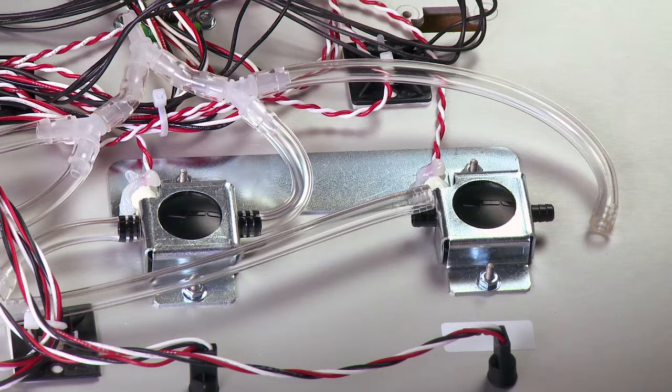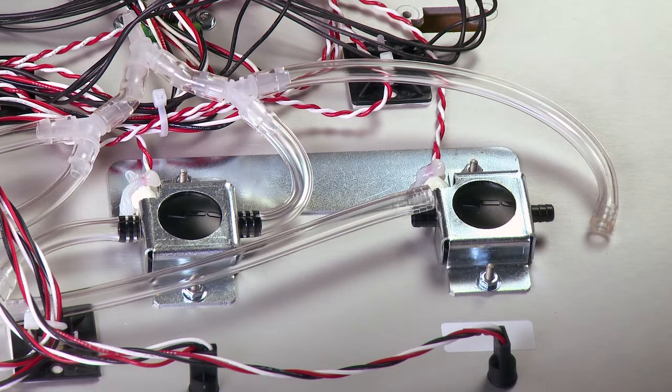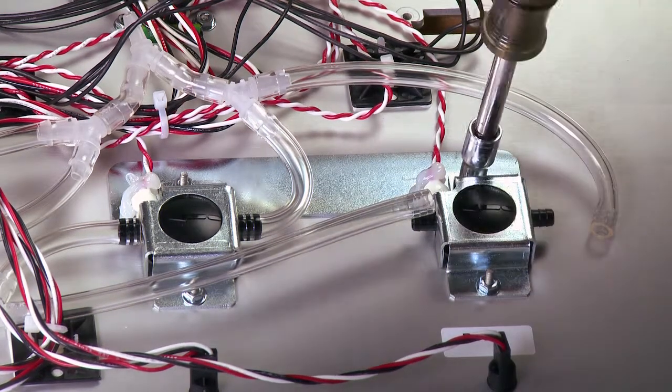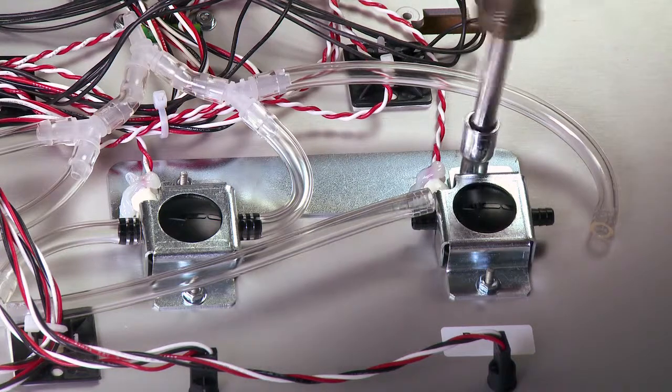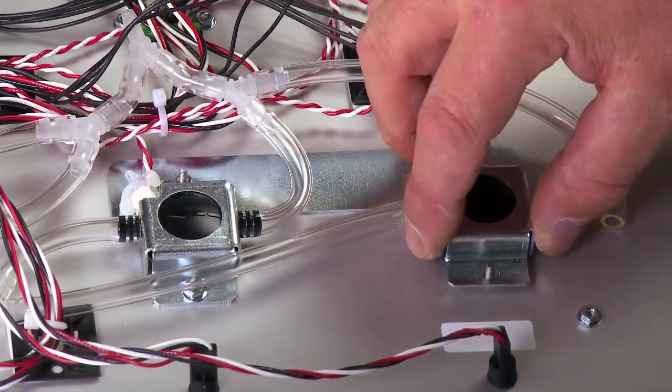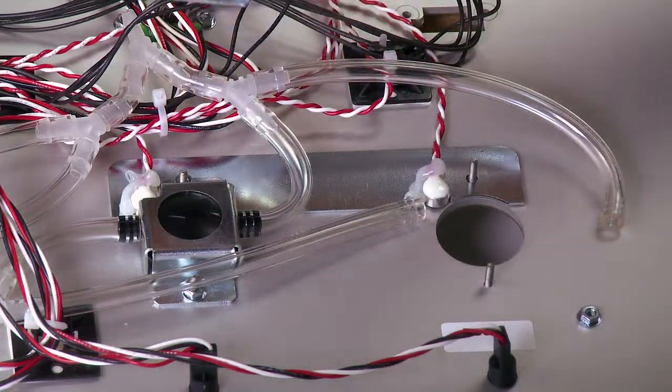Note which tube pertains to which function for reassembly. The next step is to remove the calibration cup holder bracket using a ¼-inch nut driver. Remove the two nuts holding the bracket and lift the bracket straight up to expose the calibration cup.